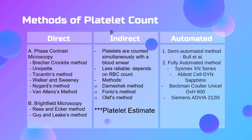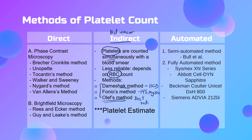The indirect count uses a blood smear instead of a hemocytometer. When performing indirect count, we count the platelets simultaneously with the red blood cells in the smear. There are three different methods: Dameshek method uses brilliant crystal blue, Fonio method uses 14% magnesium sulfate, and among the three, Olaf's method is considered the best method, though it may be tedious or cumbersome to perform.